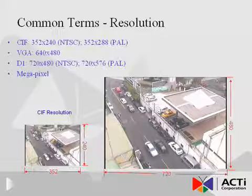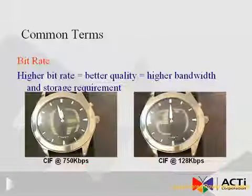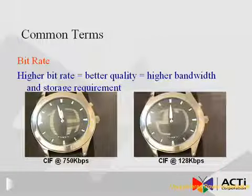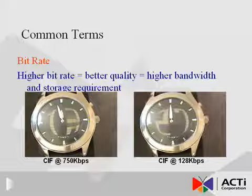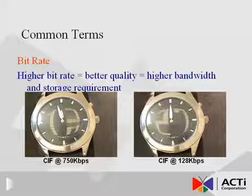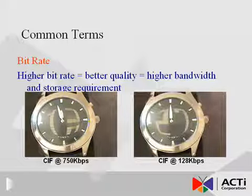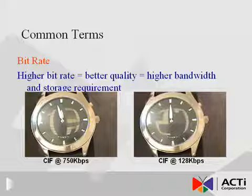The bitrate describes the data stream size in bits per second, or BPS. For the same type of compression, higher bitrate means higher picture quality, but also means higher bandwidth and storage space consumption. Between different types of compression methods, however, higher bitrate does not necessarily mean higher quality, but always means higher bandwidth and storage requirements. The two pictures show the difference between a higher bitrate and a lower bitrate. KBPS stands for kilobits per second.